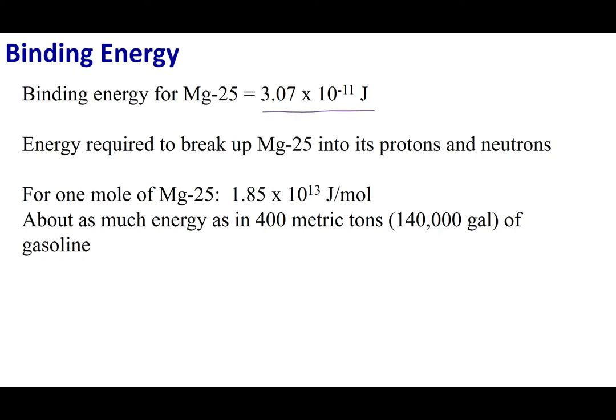If you look at the binding energy value, it looks kind of small — 3.07 times 10 to the negative 11th joules — but remember, this is per nucleus, making one atom of magnesium-25. If we calculate making one mole of magnesium-25, that equates to 1.85 times 10 to the 13th joules per mole, equivalent to 400 metric tons of gasoline. You can see why we look to the nucleus for energy.